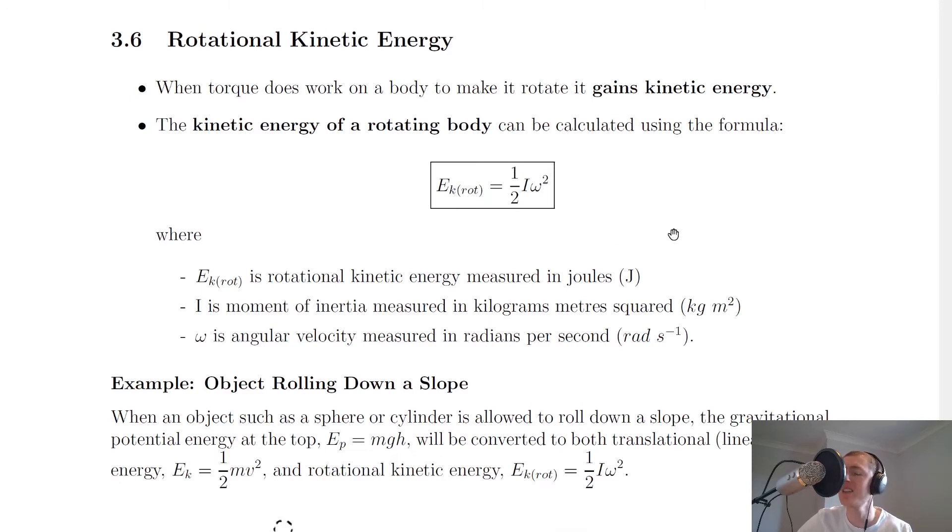Now notice the similarity to EK = (1/2)mv², the equation for kinetic energy in linear motion. This takes a very similar form where you've got rotational kinetic energy equal to a half times the moment of inertia of the object times the angular velocity of the object squared.